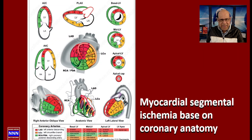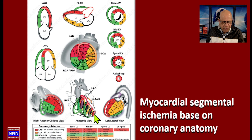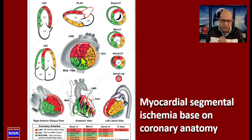This is the only slide I have, but it covers a ton of information. As you know, the heart is supplied by two coronary arteries: the left main, which divides into the left anterior descending and the circumflex branch. The left anterior descending artery, represented here in red, supplies the anterior wall of the left ventricle and the anteroseptal region of the left ventricle.